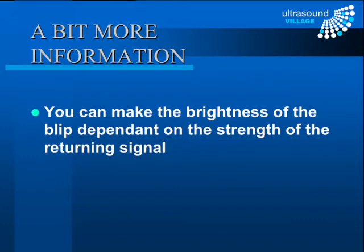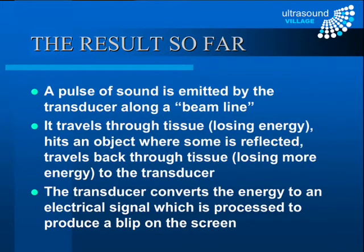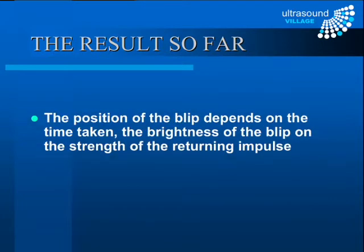When the machine receives the returning blip it works out the strength of that signal and adjusts the brightness of the blip on the screen accordingly. Putting it all together: the transducer emits a pulse along a beam line; the pulse travels through tissue losing energy, hits an object where some energy is reflected and most continues on; the reflected energy travels back undergoing attenuation again; the transducer converts it into an electrical signal processed to produce a blip on the screen. The position of the blip depends on the time taken, and the brightness depends on the strength of the returning impulse.